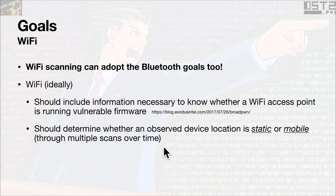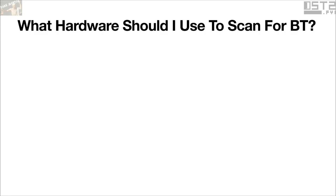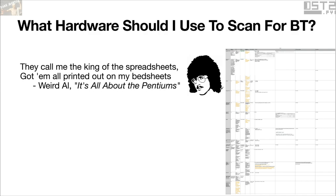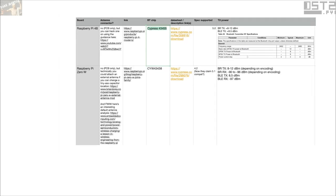When some new exploit comes out in an Intel Wi-Fi chipset, no one will actually know how many devices out there are vulnerable — even Intel probably won't really know. It would also be good to know for Wi-Fi whether a device is static or mobile, since we're seeing more mobile Wi-Fi things like hotspots connecting to cellular networks and equivalents in cars. When starting this research I asked what hardware I should use to scan for Bluetooth, and of course the only way to answer that is to make a spreadsheet.